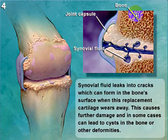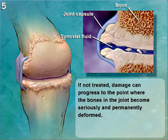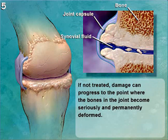Here we can see bone, joint capsule, and synovial fluid. Synovial fluid leaks into cracks which can form in the bone's surface when the replacement cartilage wears away. This causes further damage and in some cases can lead to cysts in the bone or other deformities. Finally, if not treated, damage can progress to the point where the bones in the joint become seriously and permanently deformed.